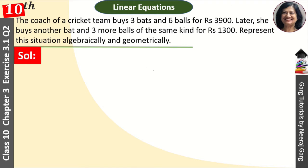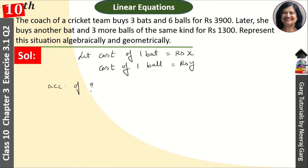We have to represent algebraically and geometrically. Let the cost of one bat be x rupees and the cost of one ball be y rupees. According to the question, the coach buys 3 bats and 6 balls for rupees 3900, so our first equation is: 3x + 6y = 3900.